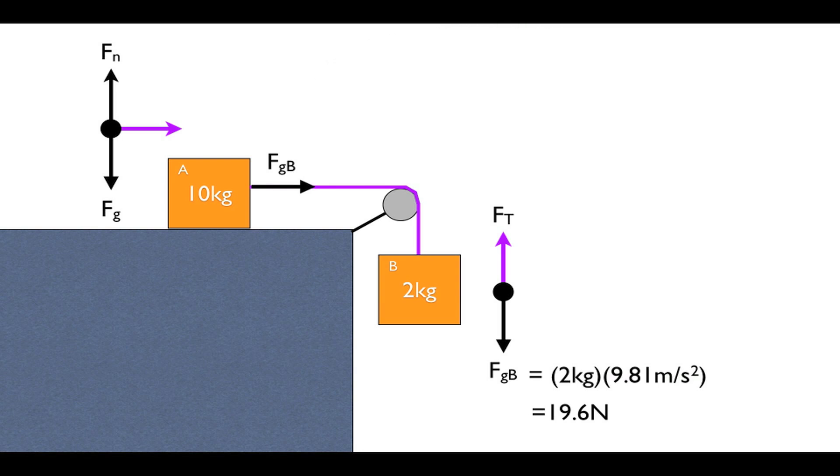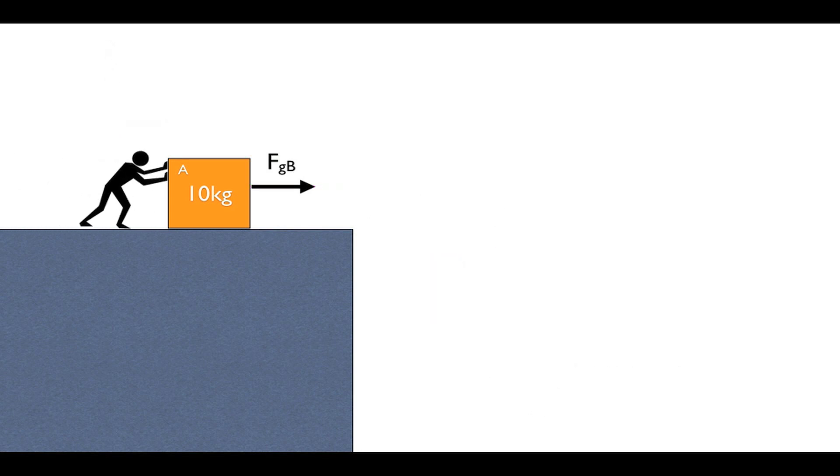Okay, so now we see that the force of gravity from box B is what is providing the force to move box A. Cool. Now that we see this, we can forget all about the entire pulley system and just pretend that the box is being pushed with that same 19.6 Newtons of force.